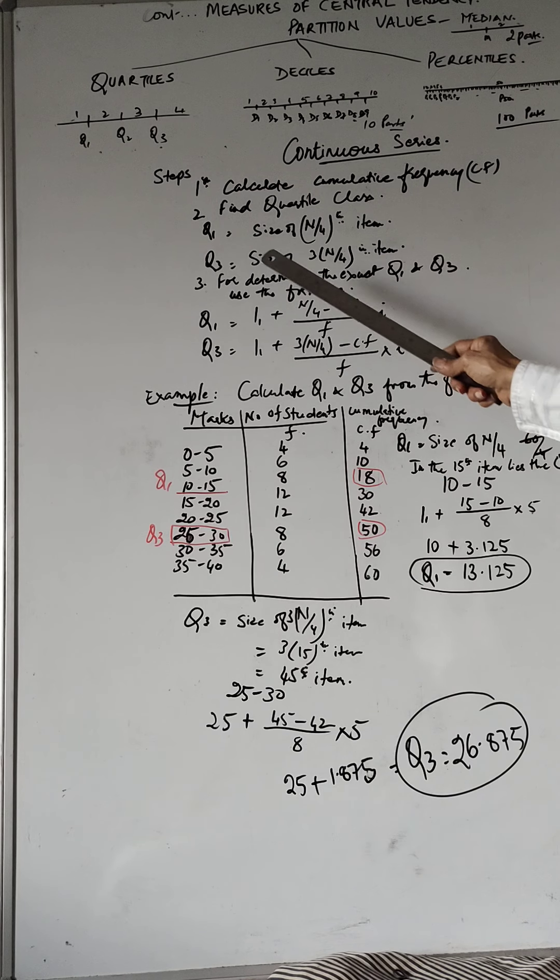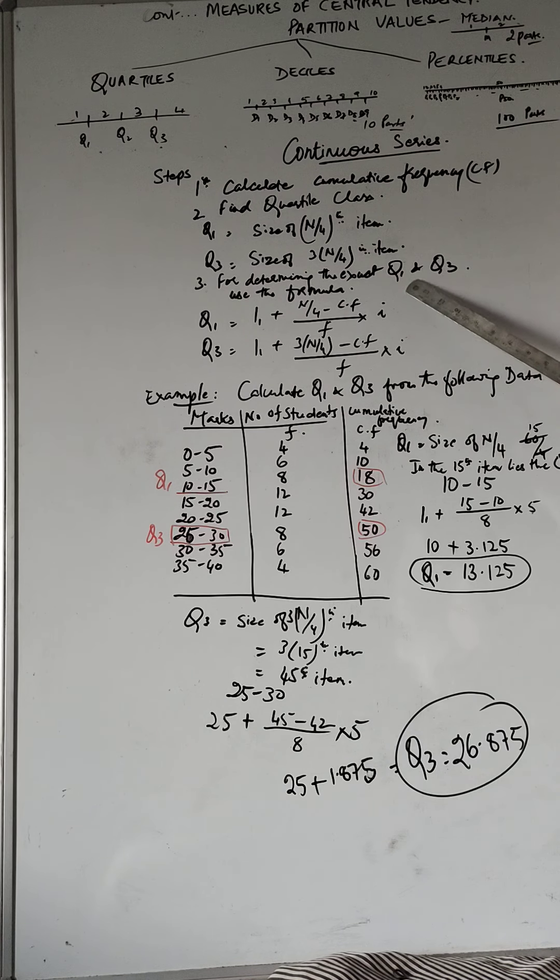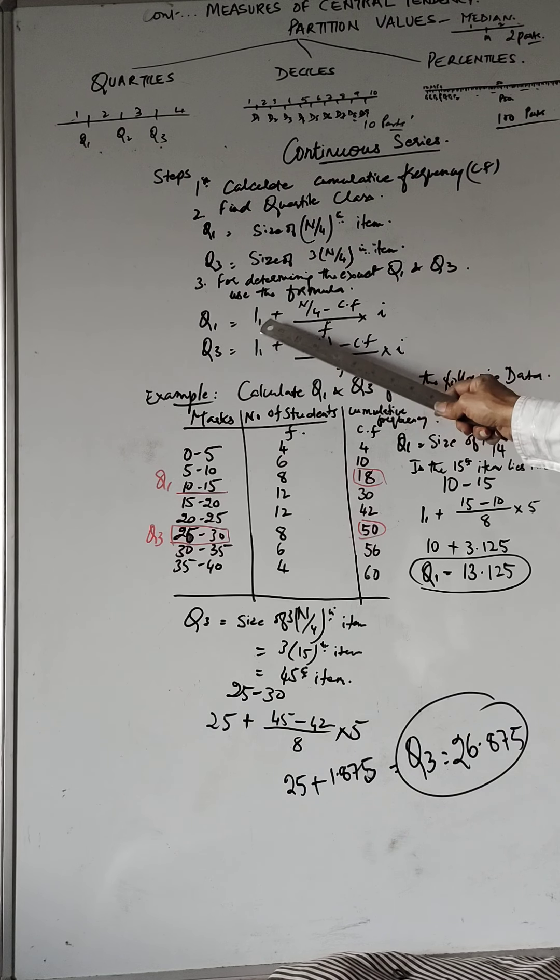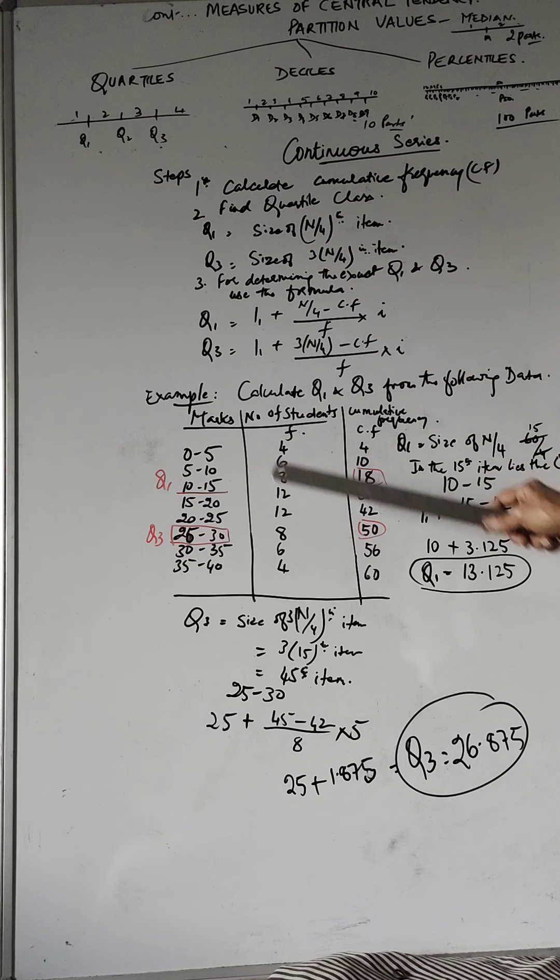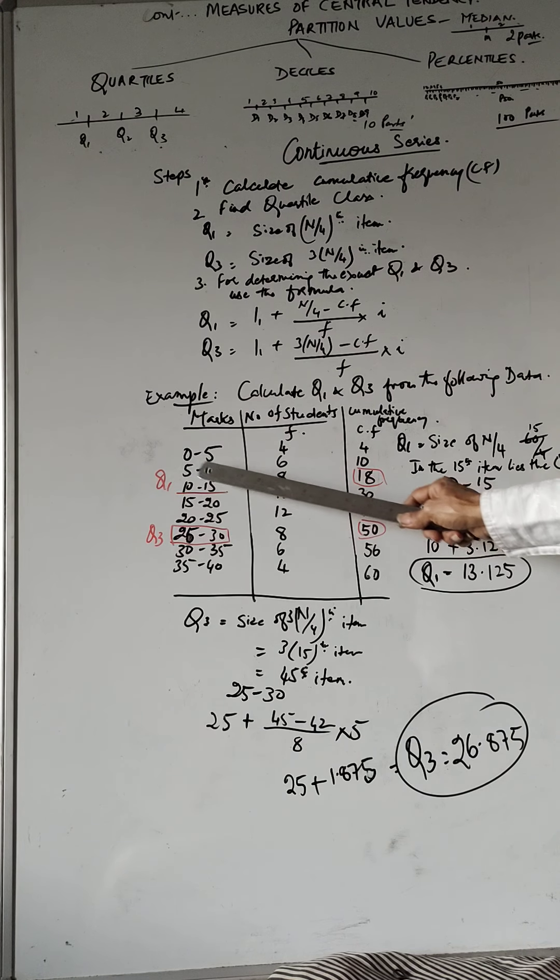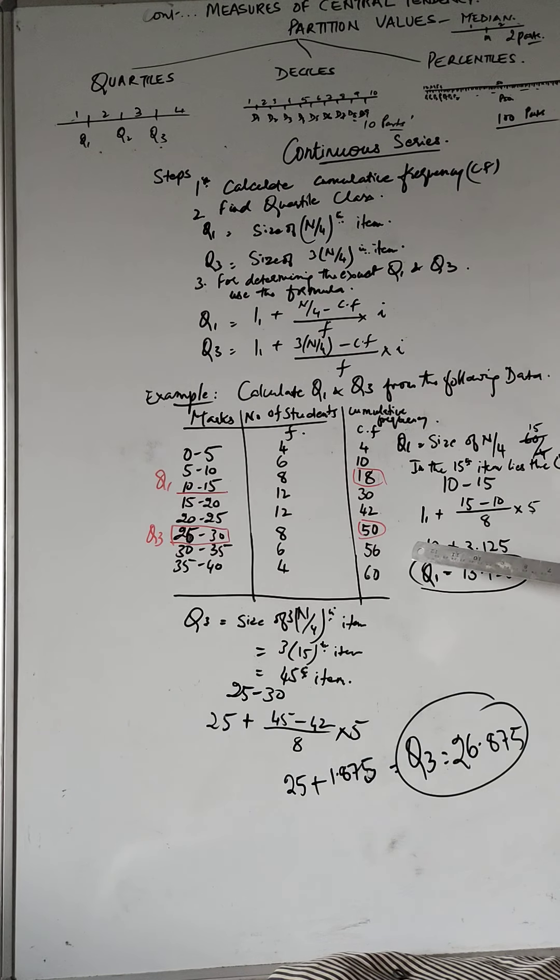And then for determining the exact Q1, we will use this formula: Q1 is equal to L1 plus n by 4 minus Cf upon F into I. So here, which is the lower limit? 10 to 15 is within this range, we will find the Q1. Now what is L1? So L1 is the lower limit of the class interval, which is 10. So write down 10 plus n by 4, which is 15 minus Cf. Cf is previous to that, it is 10.